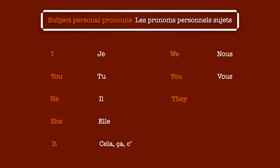'You' is translated by 'vous' in plural, and you can see that it's totally different from the singular pronoun, so don't miss this out. Also, there are two translations of 'they' depending on if we are speaking about masculine plural or feminine plural. So if you are speaking about a group of men, or a group of people with at least one man, you have to use 'ils.' And if you are speaking about a group of women, you need to say 'elles.' Don't worry, I will also explain this grammar rule in a dedicated video.